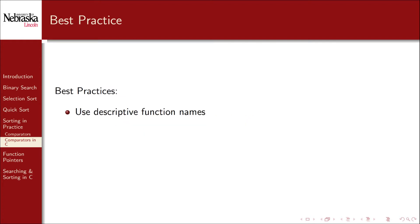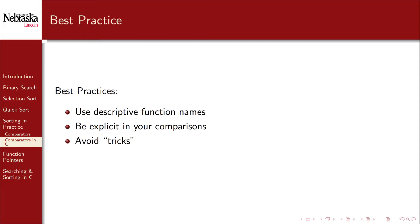We'll develop several examples here in a moment, but let's keep in mind best practices as we do so. We'll want to use descriptive names for our functions that indicate what they're comparing and how. We'll want to be explicit in our comparisons. And we'll want to avoid temptations to use certain tricks that may have many pitfalls. Whenever possible, we'll reuse our comparator functionality.